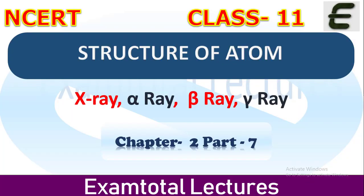Welcome to Exam Total Lectures. This is Part 7 of Chapter 2 of Class 11, Structure of Atom. In this lecture we will get to know about X-rays, alpha rays, beta rays, and gamma rays. In our last lecture we saw that in one atom there are different types of subatomic particles — electrons, protons, neutrons, canal rays, and cathode rays.